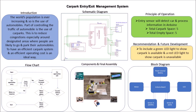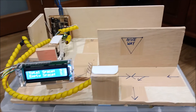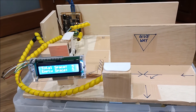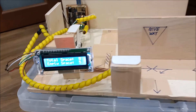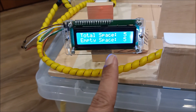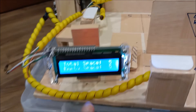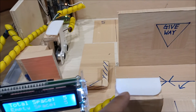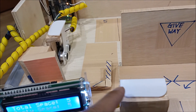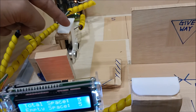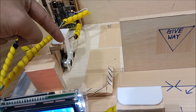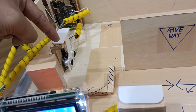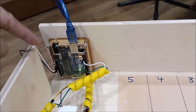I would like to end this presentation and carry on with the demonstration. Thank you. This is my project — the car park entry and exit system. This is the LCD showing total space 5 and empty space 5. This is the ultrasonic entry sensor and this is the exit ultrasonic sensor, right here on the board.